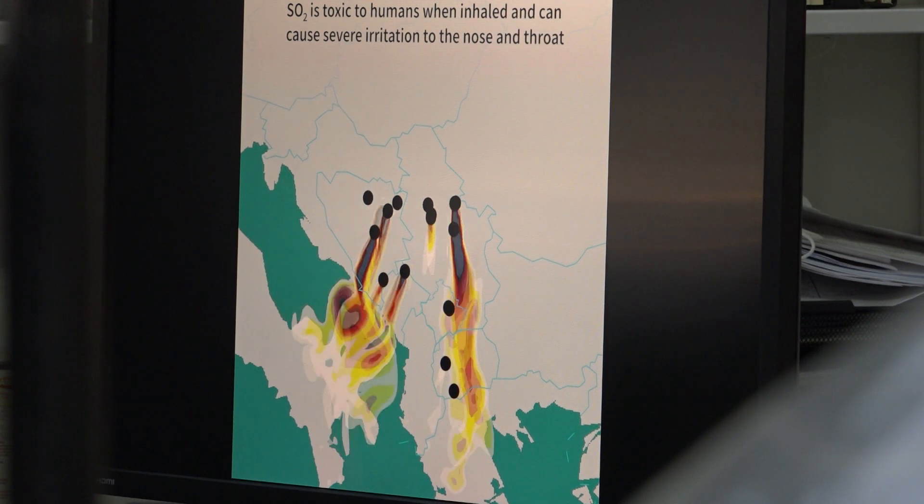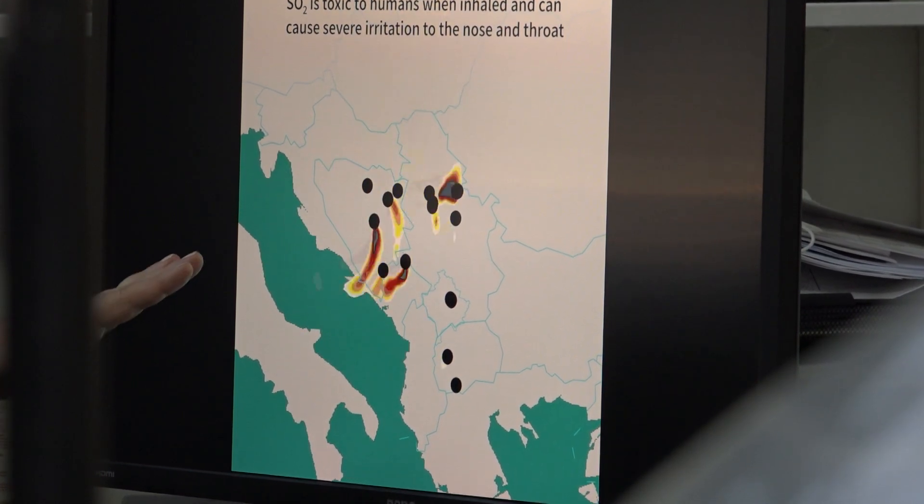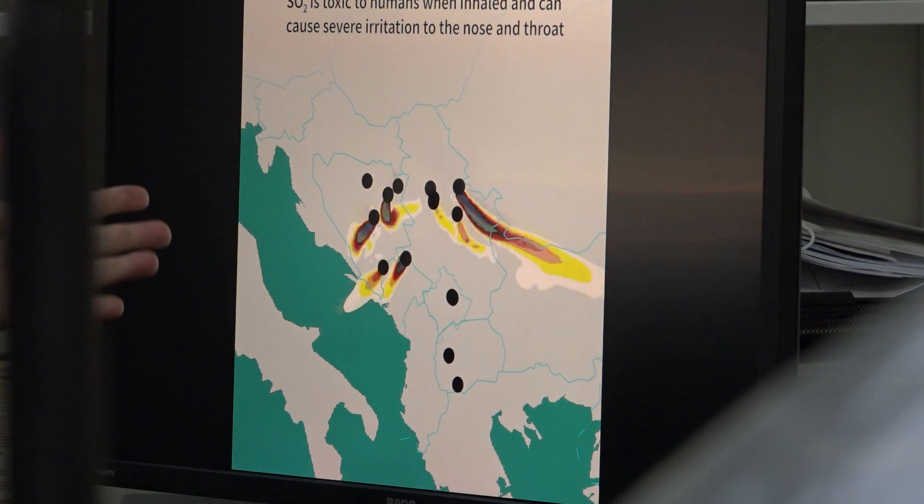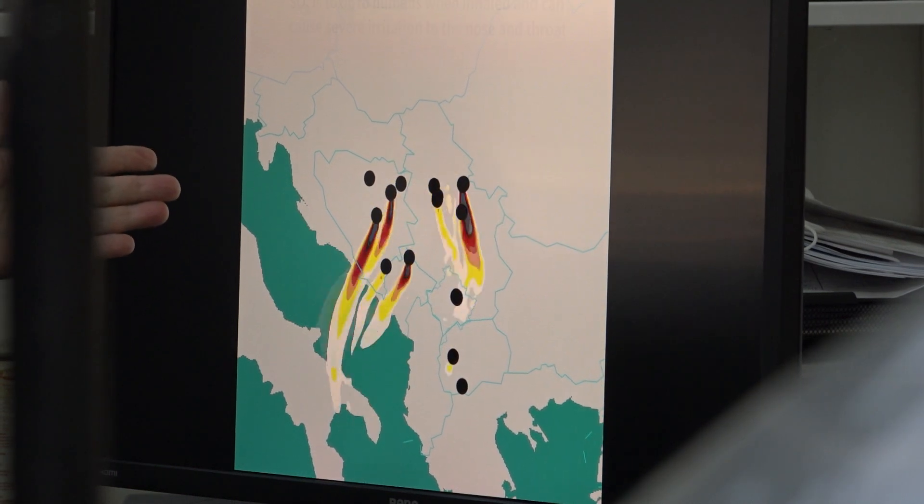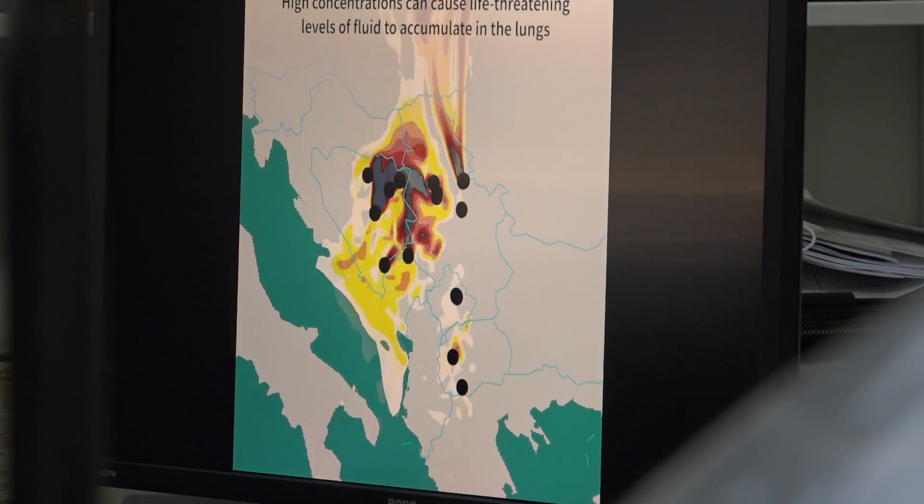A Zapadni Balkan je prepoznat kao deo sveta sa veoma zagađenim vazduhom. Razlog tome je što je naša energetika zasnovana pre svega na uglju i to na lignitu vrlo loše kvaliteta, koja ima preko tri puta manju kalorijsku moć od drugih prosečnih ugljeva. Ali ne samo Srbija, i Bosna i Hercegovina i Makedonija, Crna Gora.